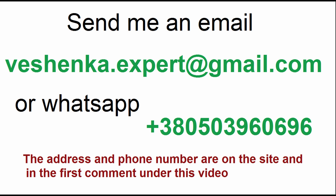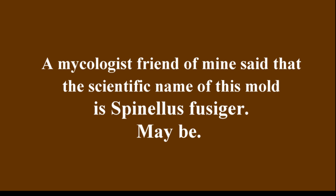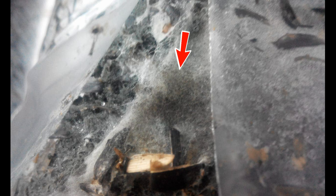I see a lot of Google searches about black mold and mycelium and substrate. If you have this problem, please send me a photo to my email — the address is now on the screen and in the description under this video. I have encountered black mold from the Mucor family only once. A mycologist friend of mine said that the scientific name of this mold is Spinalis fusiger — though I'm not 100% sure. I also saw a gray mold, and I don't know its name either. I probably won't be able to tell the difference between Mucor mold and dark gray Aspergillus, although they can be easily distinguished under a microscope by the structure of the sporangia.